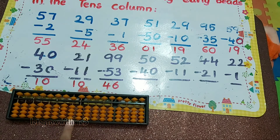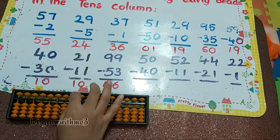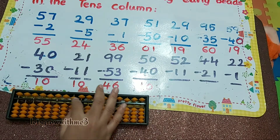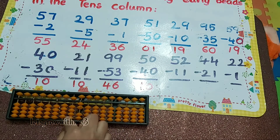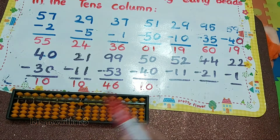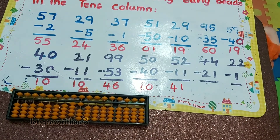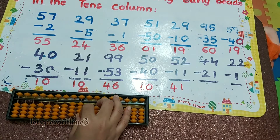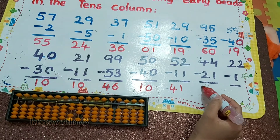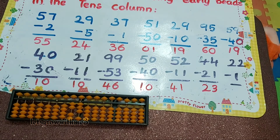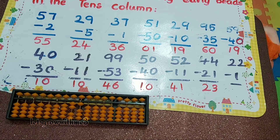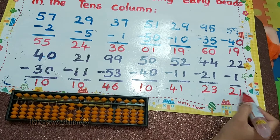Next one: 50 minus 40 — how to do minus 4? Minus 5 plus 1, so the answer is 10. Next one: 52 minus 11 — how to do minus 1? Minus 5 plus 4, minus 1, so the answer is 41. Next one: 44 minus 21, so the answer is 23. Next one: 22 minus 1, so the answer is 21.